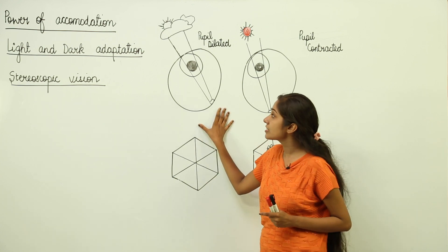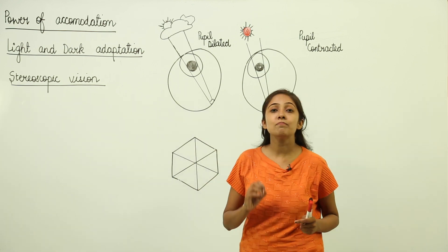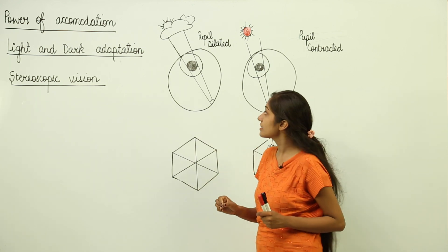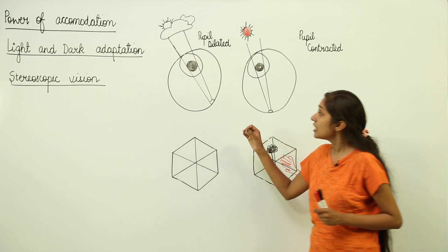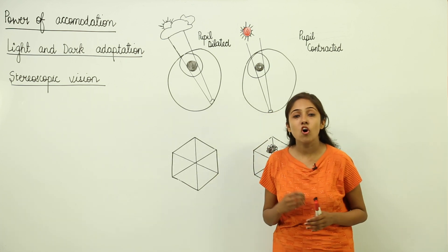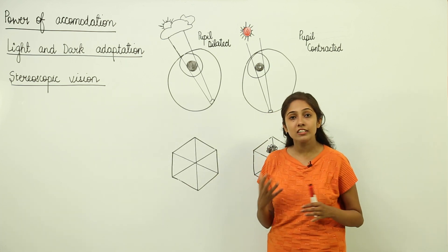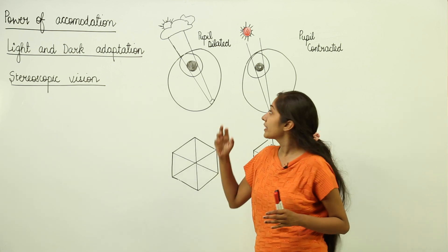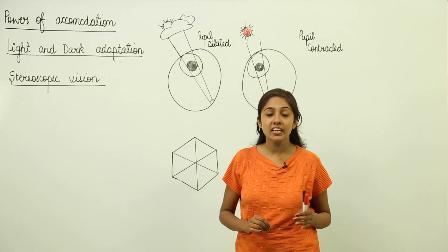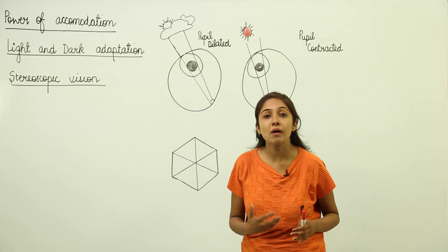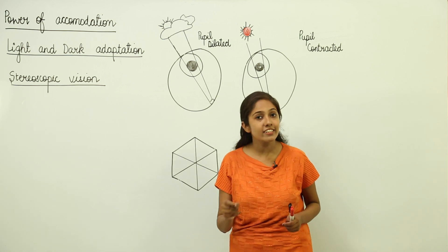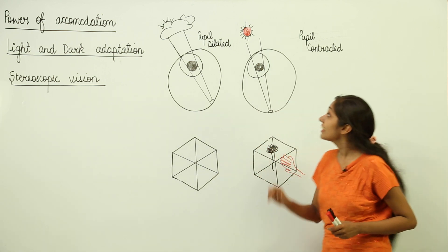For light adaptation, the rhodopsin pigment is responsible. After some time you will be able to see the objects in the darker room because of the dilation of the pupil, allowing more light to enter into your eyes.